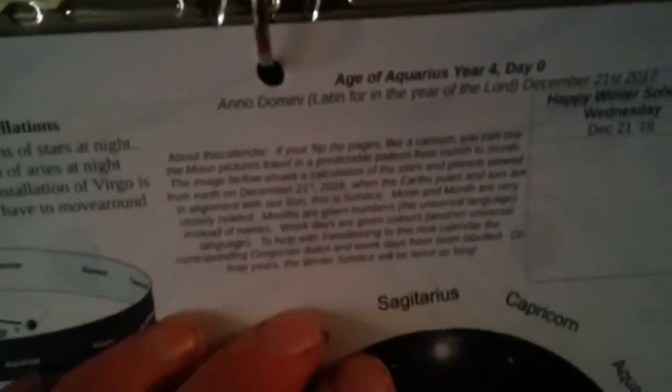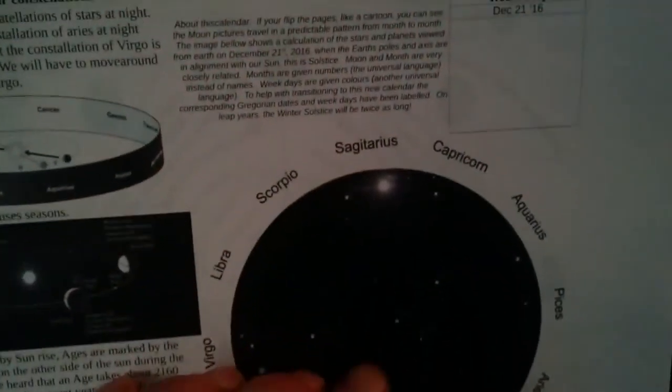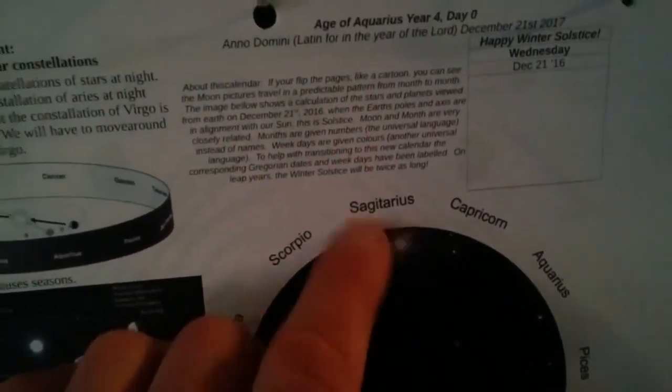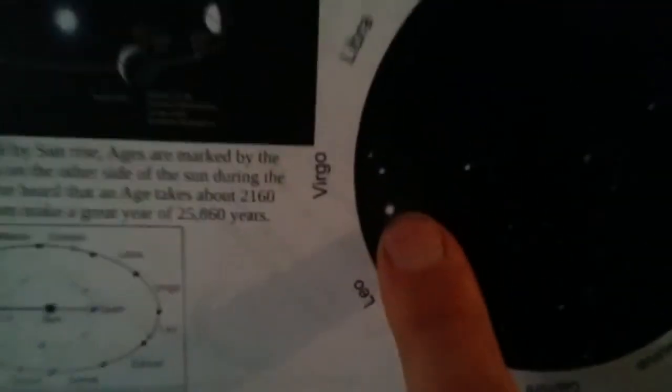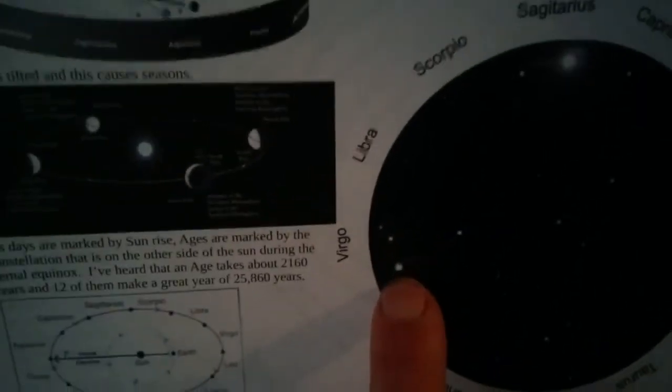This picture is shown on the first day of this calendar or even day zero is what I'm going to call it. On day zero, the Sun here is in Sagittarius. The Moon over here is between Leo and Virgo.